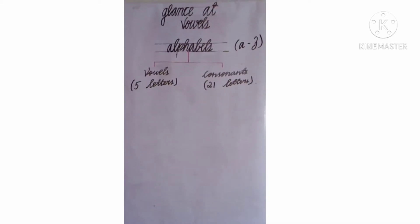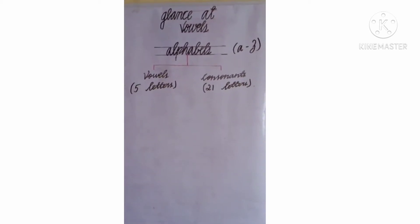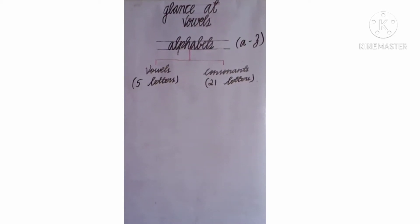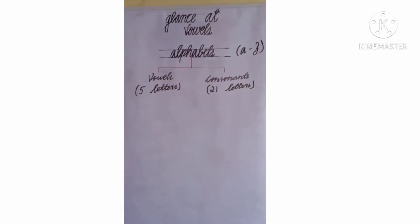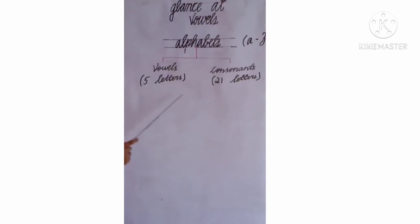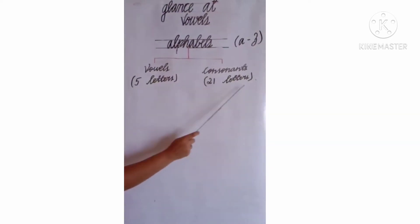Actually we have alphabets in English, 26 letters we have in alphabets, A to Z. So in that alphabets they have divided into two, that is vowels and consonants. In vowels we have five letters and in consonants we have 21 letters.